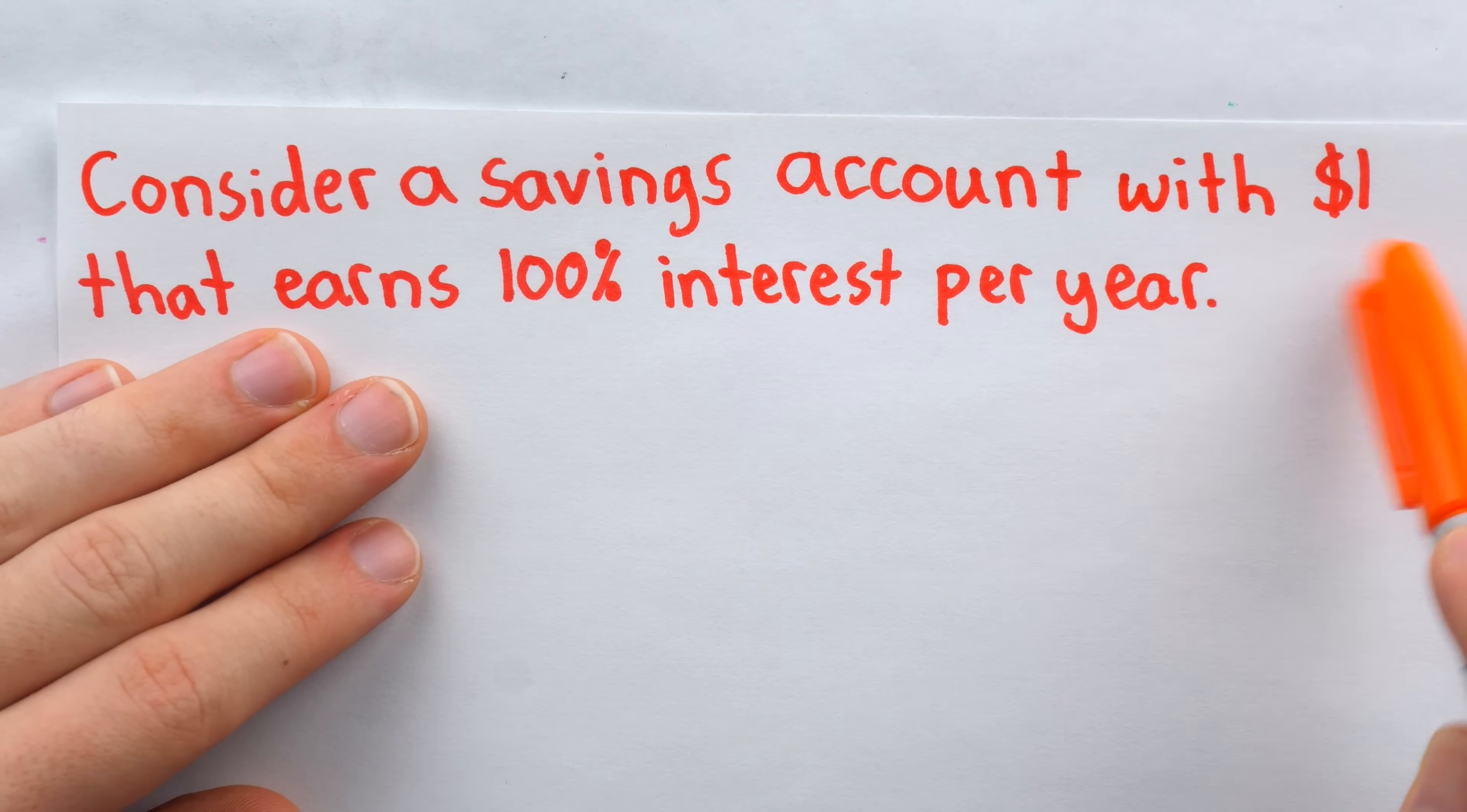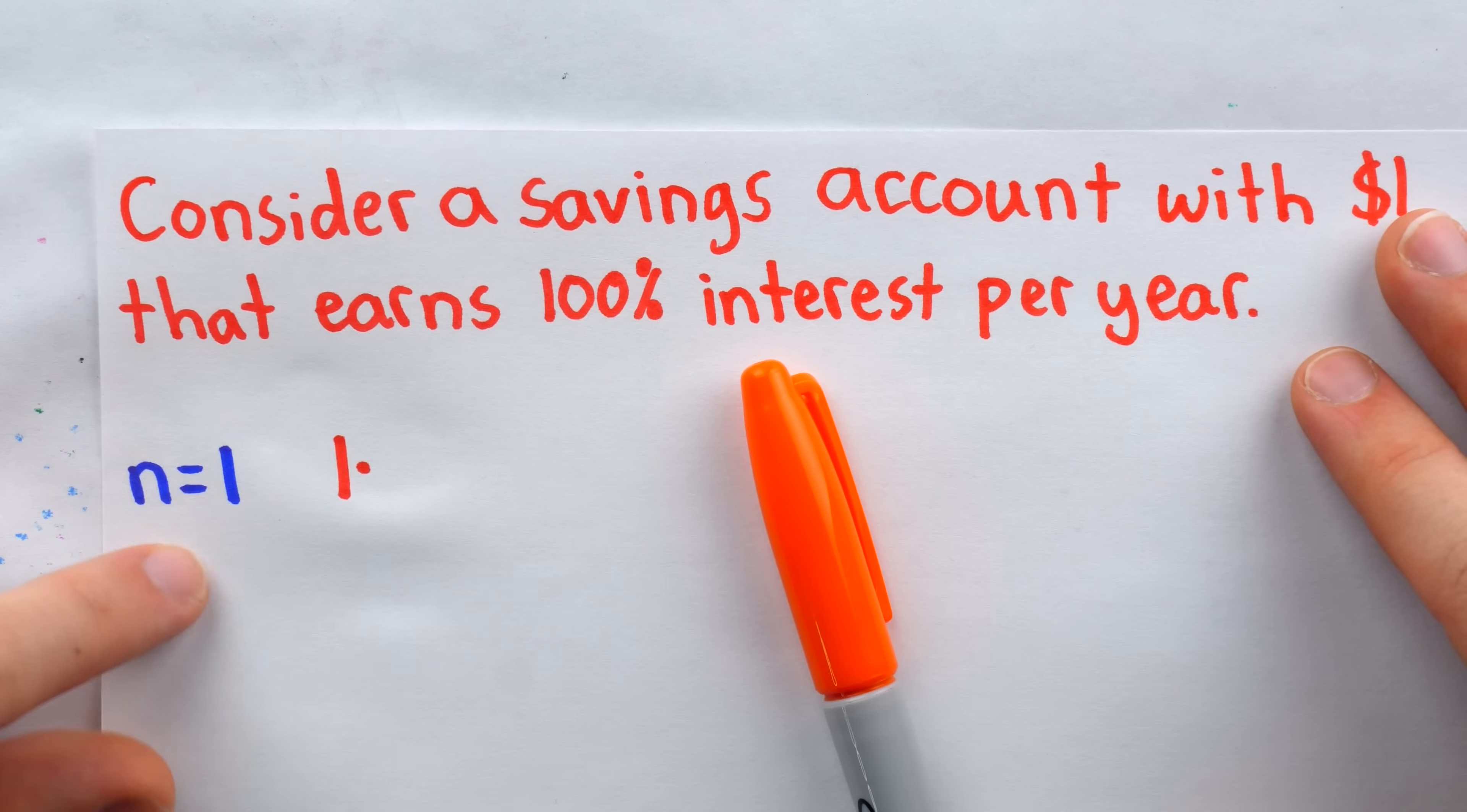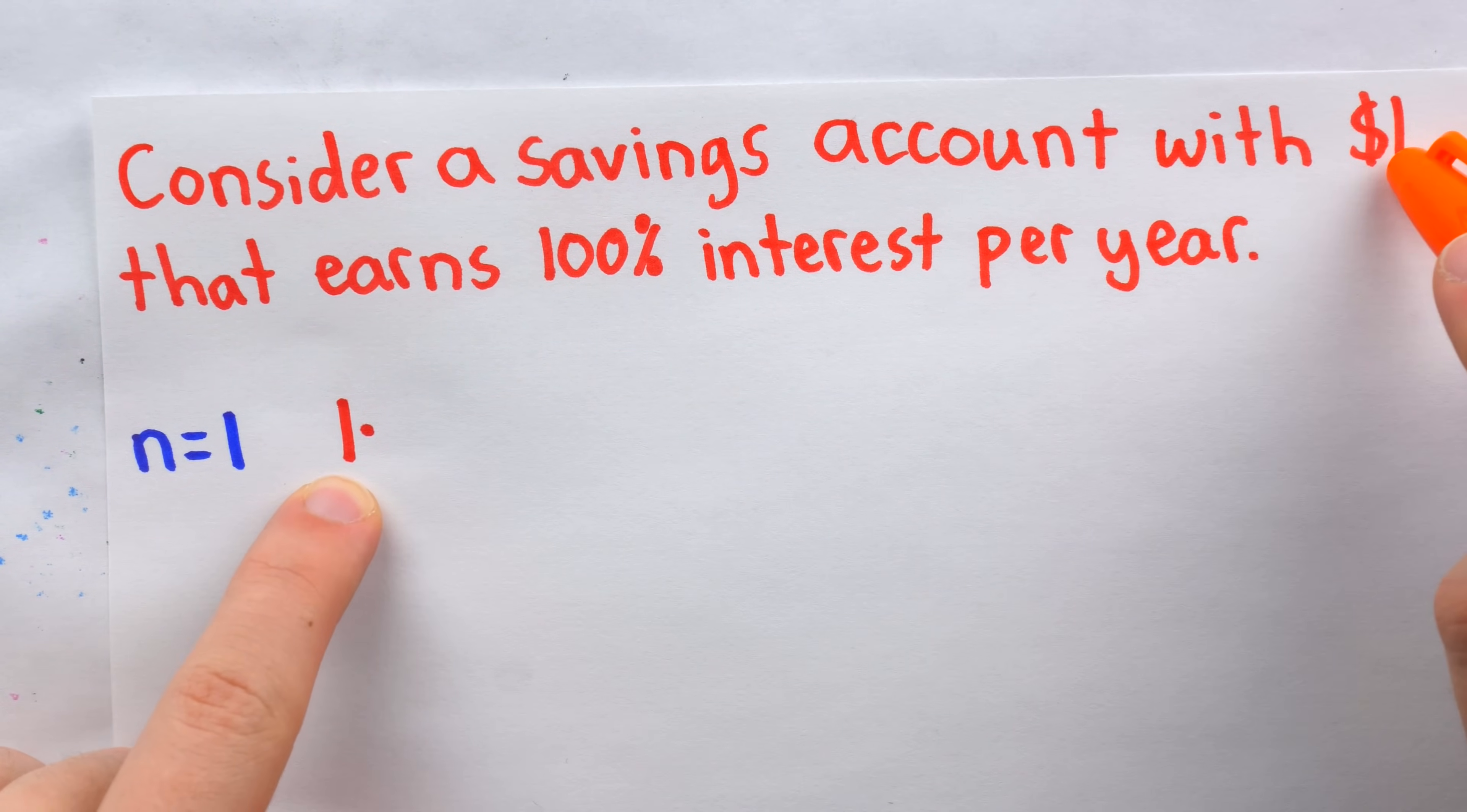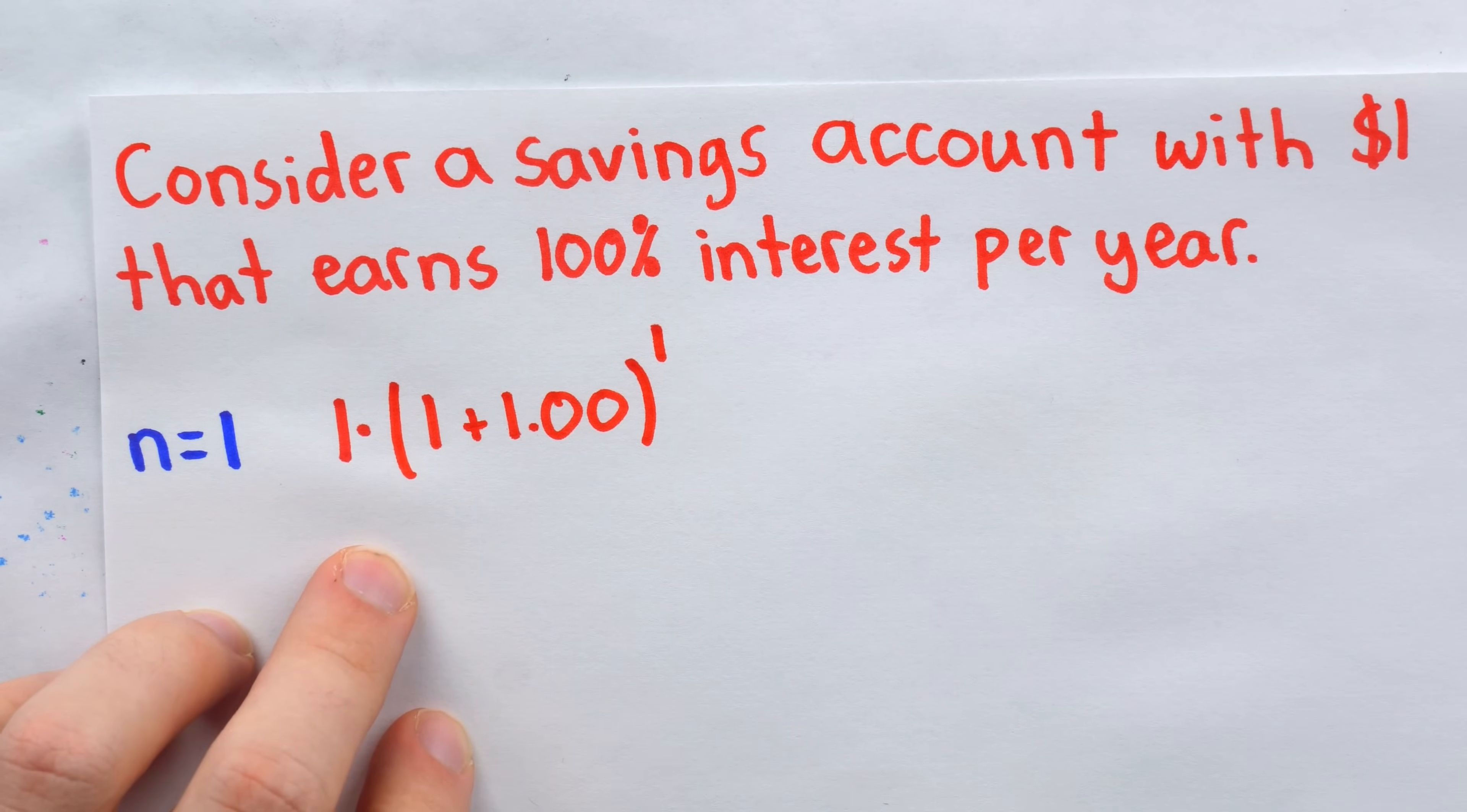Consider a savings account with $1 that earns 100% interest per year. Now with interest, there's this thing called compounding, which is basically how frequently interest is calculated over a given time period. Let's call the number of times interest is compounded n. So in the most simple case where n is equal to 1 and the interest is compounded once per year, then after 1 year the amount in the savings account looks like this.